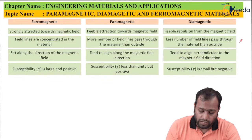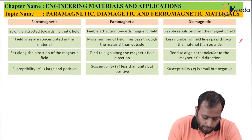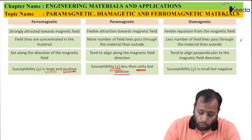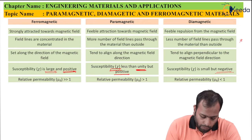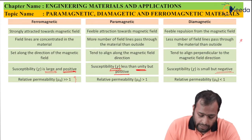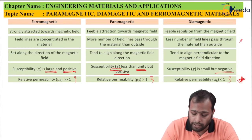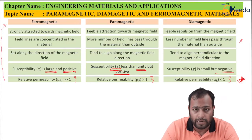Fourth point on susceptibility: for paramagnetic, susceptibility is less than unity but positive. For diamagnetic, susceptibility is negative. For ferromagnetic, susceptibility is large and positive. Fifth point on relative permeability: μr is much much greater than 1 for ferromagnetic, greater than 1 for paramagnetic, and less than 1 for diamagnetic — this is the foundation of the initial classification.